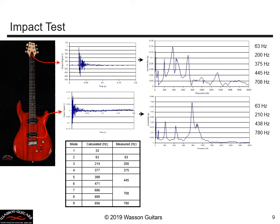If we take that signal and do a Fourier transform of it — a tap or impact excites a wide range of frequencies, so all structural mode vibrations should appear. We get a first peak at 63 Hz, another at 200 Hz, one at 375 Hz, and so on. If we place the accelerometer on the body and tap, we get some of these same modes but not all. Our first calculated mode at 33 Hz isn't showing up — it's too low in the noise level and probably too well damped.